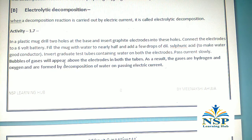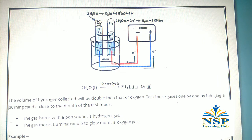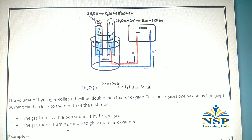Bubbles of gases will appear above the electrodes in both tubes. The gases formed are hydrogen and oxygen, produced by decomposition of water on passing electric current. The volume of hydrogen collected will be double that of oxygen. Test these gases by bringing a burning candle close to the mouth of each tube. The gas that burns with a pop sound is hydrogen gas; the gas that makes a burning candle glow more brightly is oxygen gas.